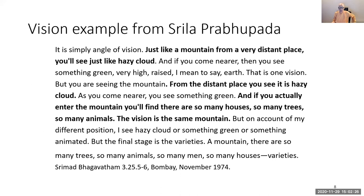As Srila Prabhupada explains in a lecture in Bombay in November 1974: it is a simple angle of vision — like a mountain seen from a very distant place. You see just a hazy cloud. If you come near, you see something green, very high, raised earth. But if you actually enter the mountain, you find there are so many houses, so many trees, so many animals. The vision is the same mountain, but on account of different positions, you see a hazy cloud, something green, or something animated. The final stage reveals all the varieties — trees, animals, men, houses.